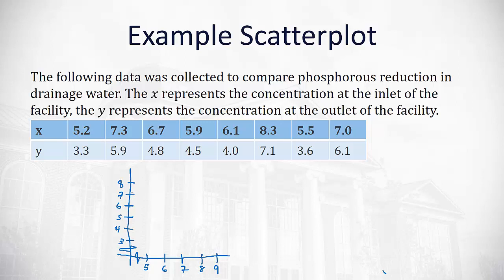We can put a dot to represent each point. So, when x is 5.2, y is 3.3. So, we'll go right 5.2 and up 3.3 to make our first dot. Then we'll go right 7.3 and up to 5.9 and make another dot. We'll write 6.7 and up to 4.8. And there's our next dot.